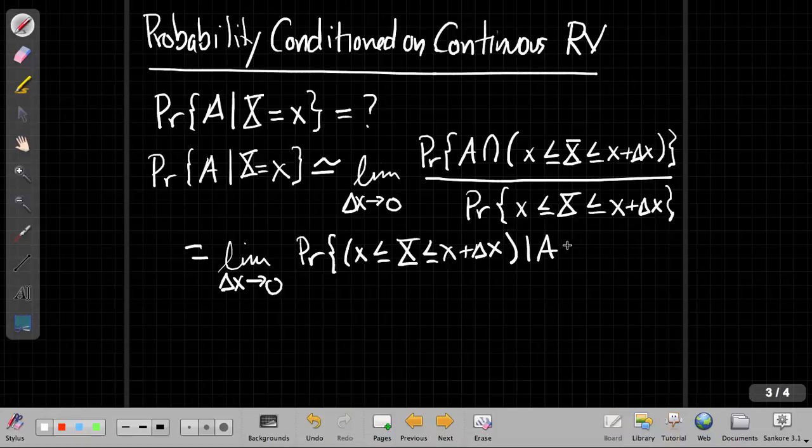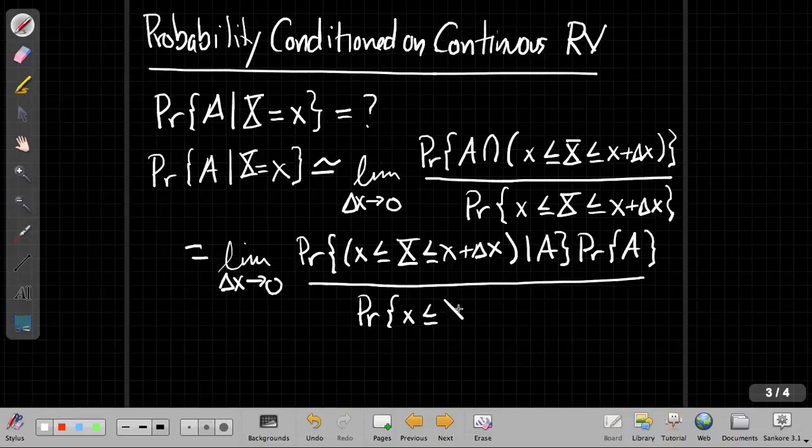given A, which is some event, some set of outcomes, times the probability of A, right? This is just, this joint probability is the same as the conditional written like this times the probability of A, and again, the denominator is unchanged. So I still have x's between, in this tiny interval, little tiny interval between x and delta x.